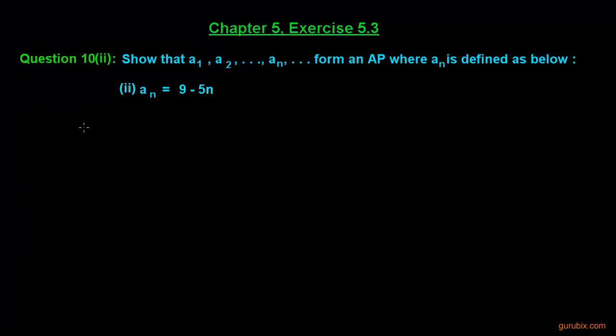This is the second part of question 10 of exercise 5.3 of chapter 5. In this question we are asked to check whether this sequence forms an AP or not, where AN equals 9 minus 5N. We have to check that this formula AN equals 9 minus 5N forms an AP or not.